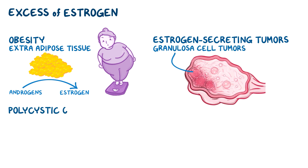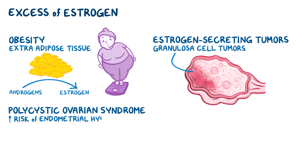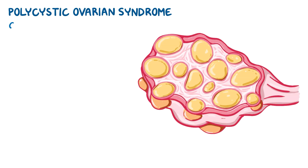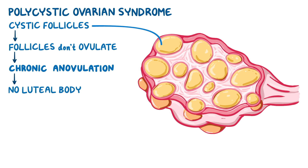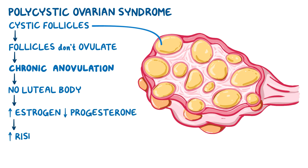People with polycystic ovarian syndrome are also at risk of endometrial hyperplasia. In this condition, the ovary is full of cystic follicles, all of which secrete estrogen. To make things even worse, these follicles don't ovulate most of the time, a condition known as chronic anovulation. So there's no luteal body to secrete progesterone. This disease will cause both high estrogen and low progesterone, and both increase the risk of developing endometrial hyperplasia.